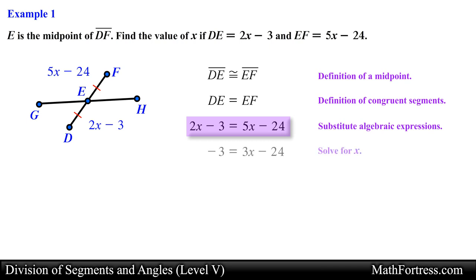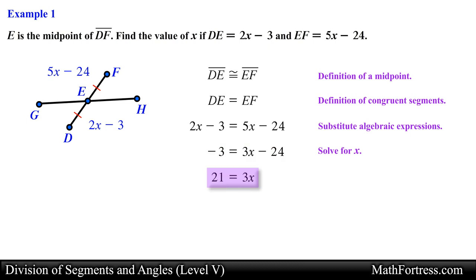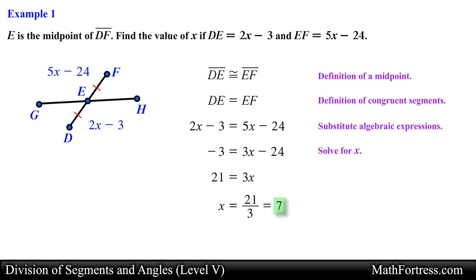We subtract 2x from both sides of the equation, then add 24 to both sides, and lastly divide both sides by 3. Simplifying, we obtain x equals 7 as the final answer.